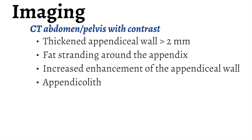One of the key components for diagnosing appendicitis is imaging. Generally, a CT scan with contrast is the preferred method of imaging appendicitis. The features that are key to diagnosis are a thickened appendiceal wall greater than two millimeters, fat stranding around the appendix indicative of inflammation, increased enhancement of the appendiceal wall, and if a blockage is present, the presence of an appendicolith, though this is not seen commonly.